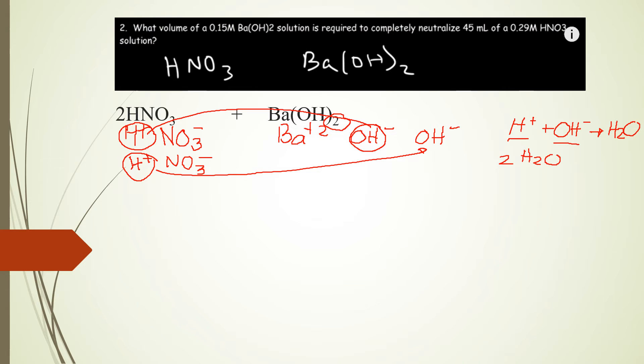Now, the given are 45 ml volume of nitric acid and 0.29 molar. We have to remember that if we multiply together volume in ml and molarity, this will give us millimole.